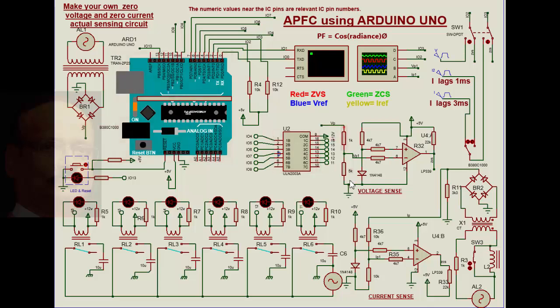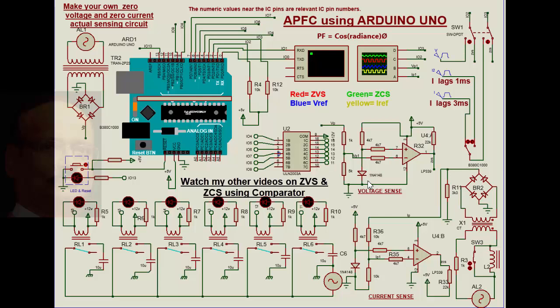With a potential divider, it is given to this comparator and compared against a diode drop of 0.6 volts. In the process, we get the zero voltage reference here.